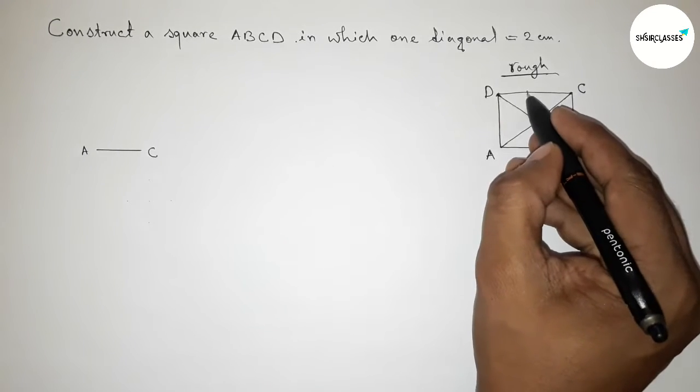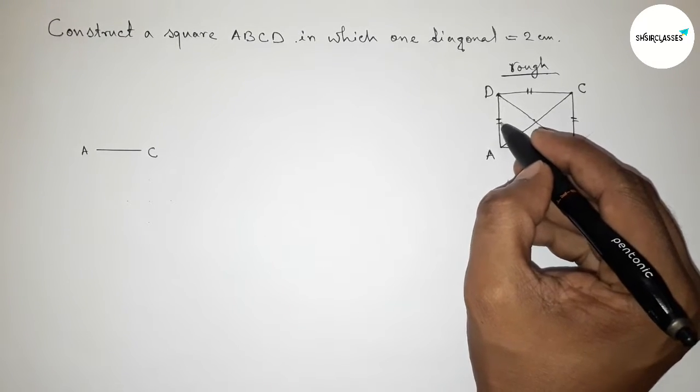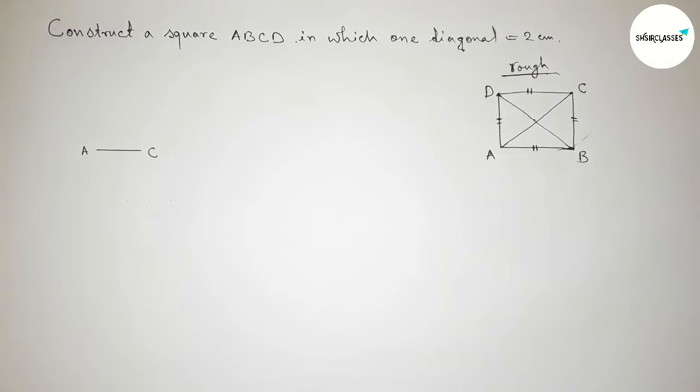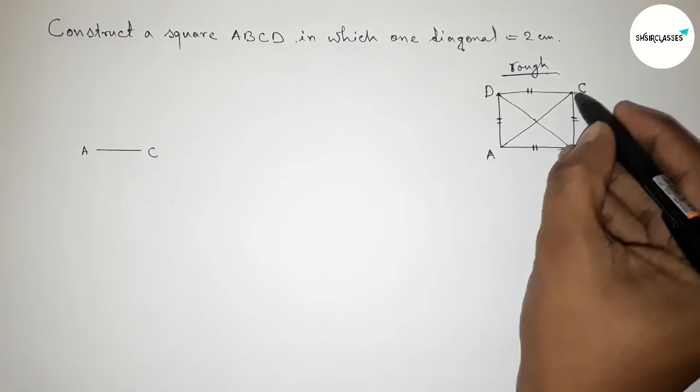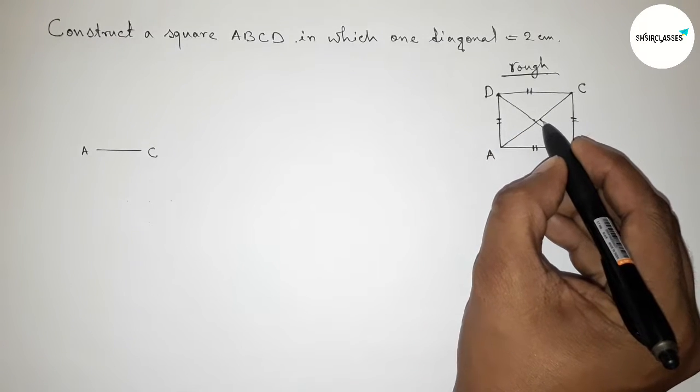Okay, so taking ABCD. ABCD is a square and we know that all the sides of a square are equal. So this side and this side, so all the sides equal.